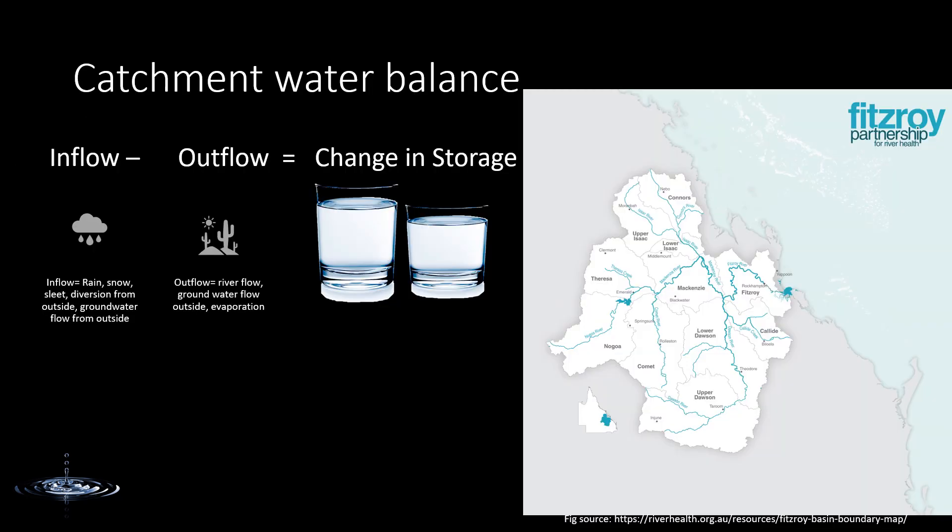Now let's talk about the catchment water balance. When we talk about global water balance, it was the water balance of the whole Earth. The catchment water balance is the water balance within a specific catchment only. Water balance is the study of inflow and outflow, and if we write it as an equation: inflow minus outflow equals the change in storage. Inflow includes rain, snow, sleet, diversion from outside the catchment, and groundwater from outside.